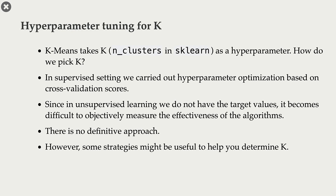In k-means, we have this hyperparameter k, and we need to decide its value in advance. How do we tune this hyperparameter? In a supervised setting, we had a set procedure: we split the data, carry out cross-validation, and pick the value of the hyperparameter that gives us the best cross-validation score.